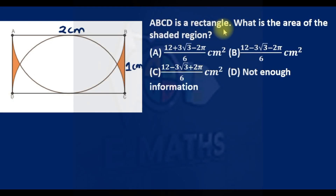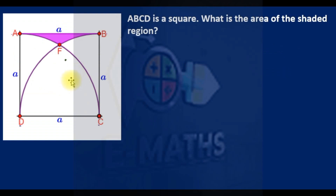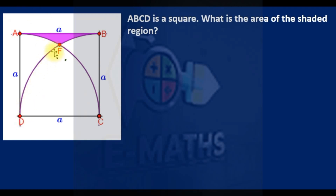They said ABCD is a rectangle — what is the area of the shaded region? Before we solve it, let me explain one concept. This is a square of side a and we're asked to find the area of this shaded region. To get the area, we subtract the remaining area. Solving it directly is hard, so what I will do is join some points: I will join D to F and C to F.